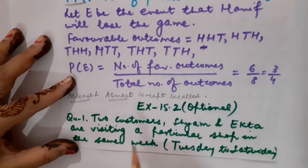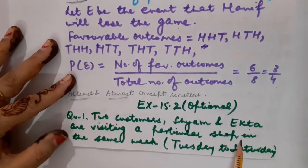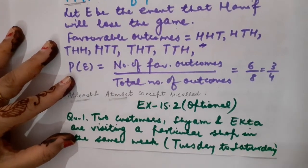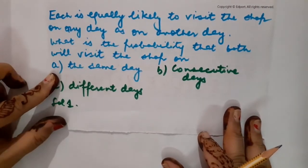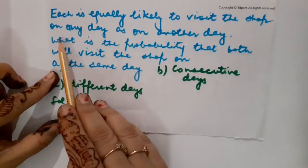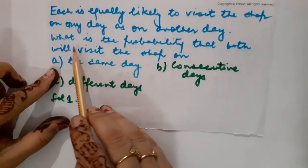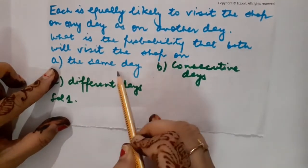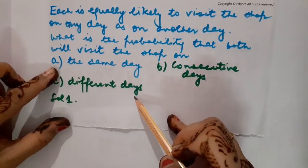The very first question says: Two customers, Shyam and Ekta, are visiting a particular shop in the same week from Tuesday to Saturday. Each is equally likely to visit the shop on any day. We need to find the probability that both will visit the shop on: (i) the same day, (ii) consecutive days, and (iii) different days.